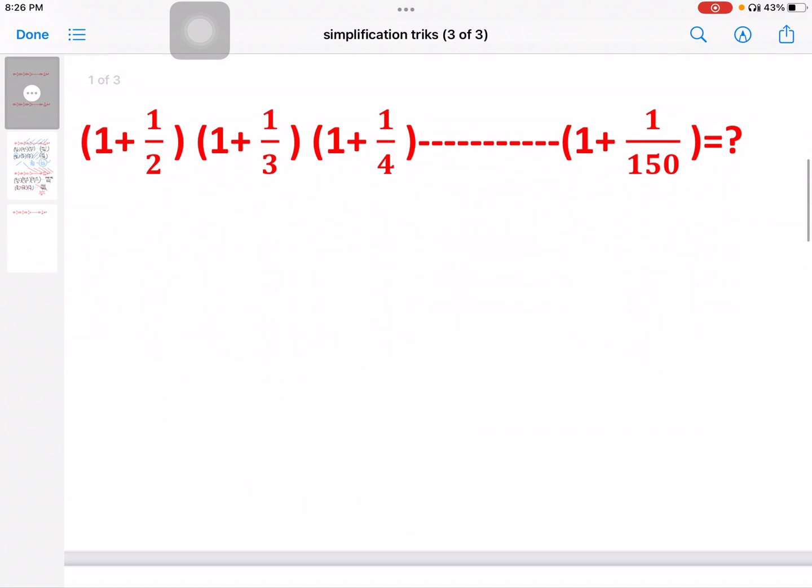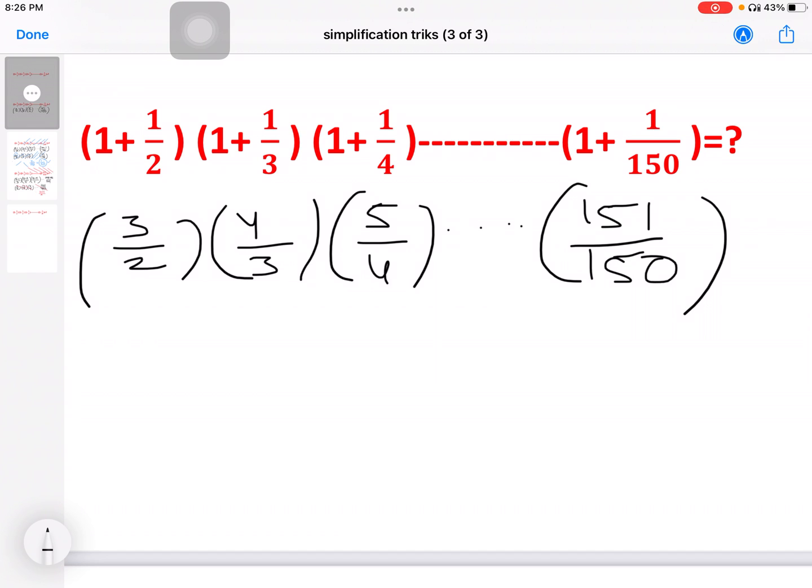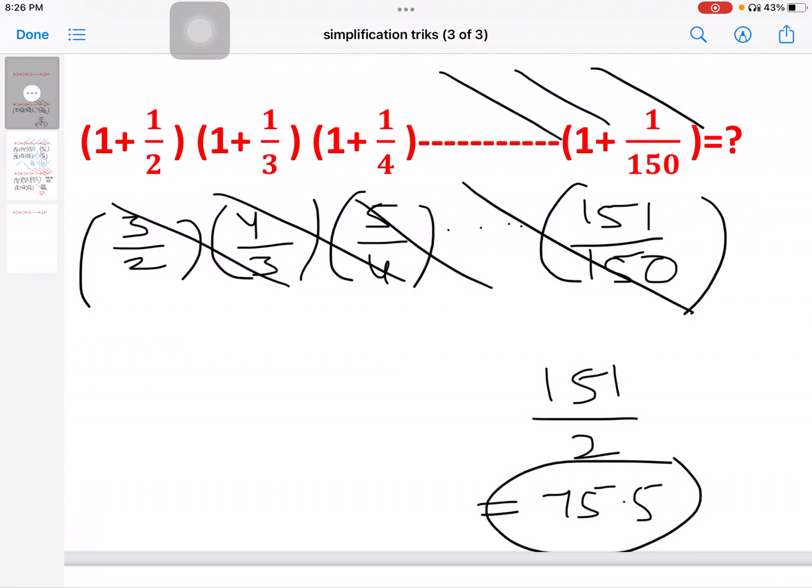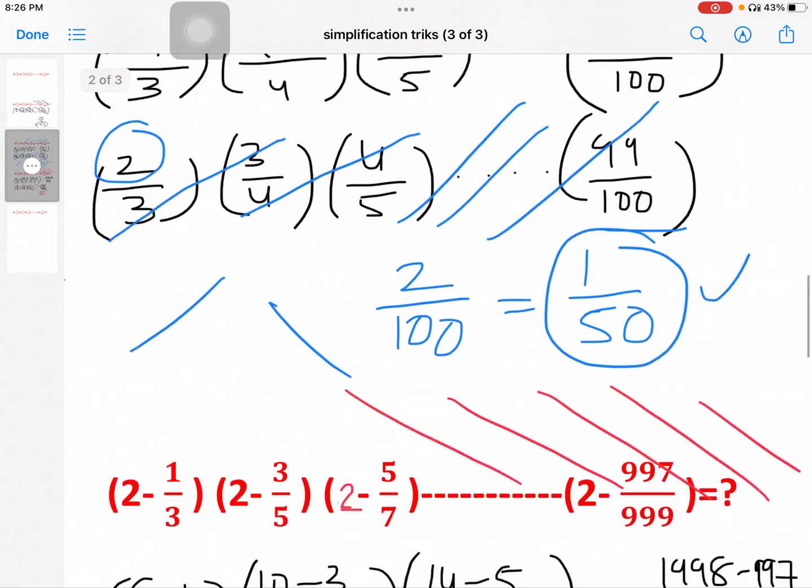This is the other model. 1 plus 1 by 2, 1 plus 1 by 3, 1 plus 1 by 4. If you look at the different models, 3 by 2, 4 by 3, 5 by 4 and so on, 151 by 150. So here the pattern is 151 by 2, that is equal to 75.5. If you have any questions, the answer is this.